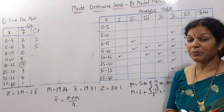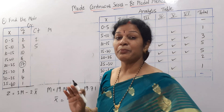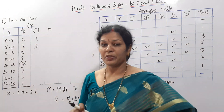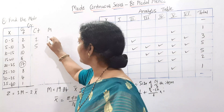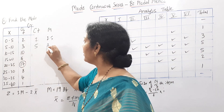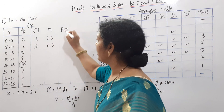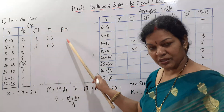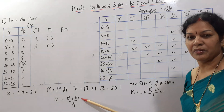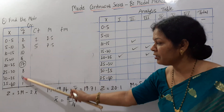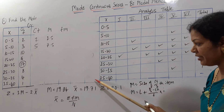F into m, where M means mid value. The mid value for the first interval (0 to 5) is 0 plus 5 divided by 2 equals 2.5; the next mid value is 7.5. We compute F × M (frequency into mid value) for each row. The total of FM divided by N gives us X̄ = 19.71.